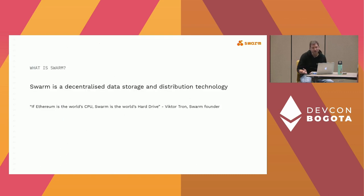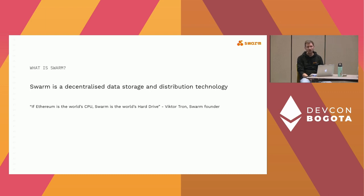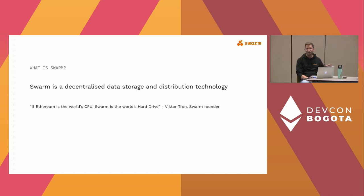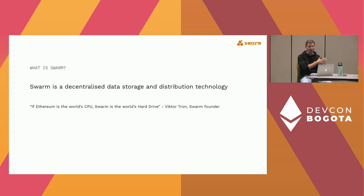Swarm is decentralized data storage and distribution technology. Its origin comes from the same time as the original Ethereum idea — this holy trinity where Ethereum is the world CPU, Swarm would be the world hard drive, and Whisper would have been the messaging system. Things turned out differently, but the roots of Swarm come from that idea.